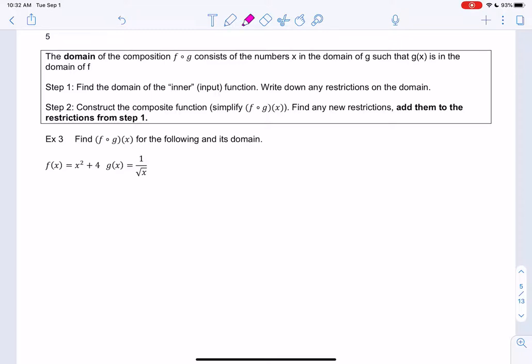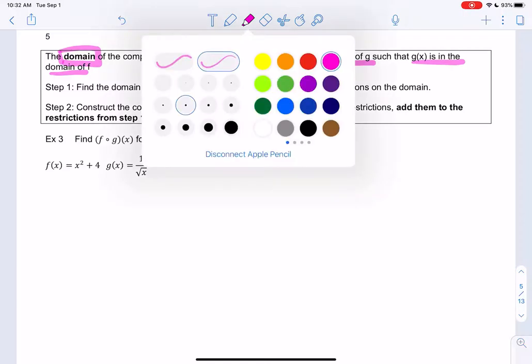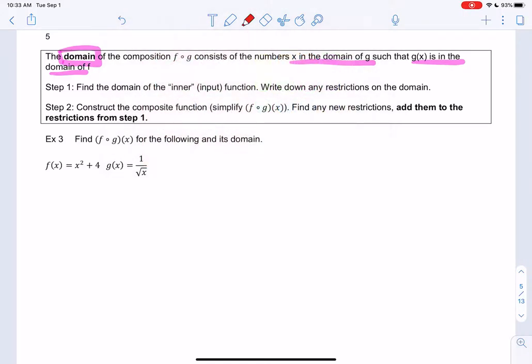So the domain, super, super tricky, and I think once we do a couple examples, it'll get easier. Here, I'm just copying the definition again. It consists of the numbers x in the domain of g, such that g(x) is also in the domain of f. Huh? So let's just write out the steps. We're going to start with x in g, which means we're going to find the domain of g, or the inner function.